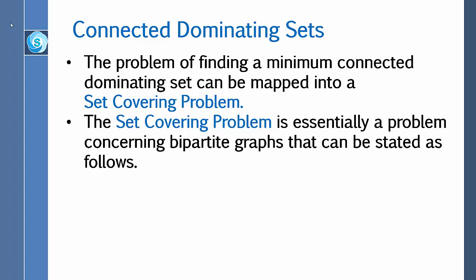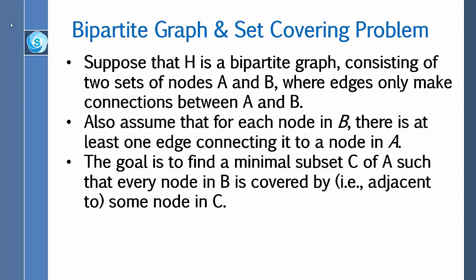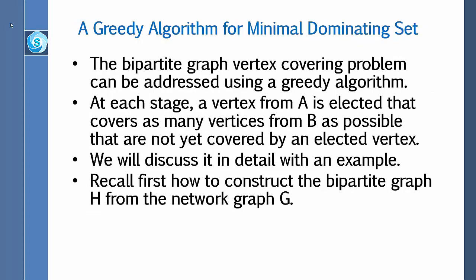The set covering problem can be stated as follows: suppose that H is a bipartite graph consisting of two sets of nodes A and B, where edges only make connections between A and B. Also assume that for each node in B there is at least one edge connecting to a node in A. The goal is to find a minimal subset C of A such that every node in B is covered by — that is, adjacent to — some node in C.